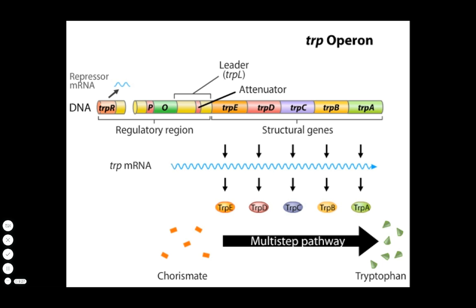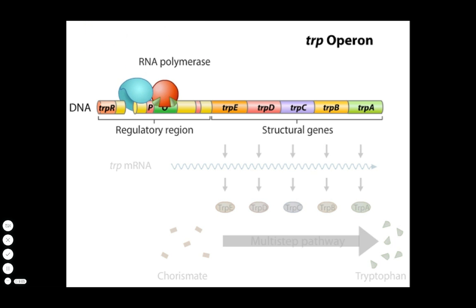The operon has a repressor called the aporepressor encoded by the trpR gene. If the cell has excess tryptophan, tryptophan binds to the aporepressor to form an activated complex called the holorepressor. In a classic example of negative regulation, the holorepressor now binds to the trp operator and turns off the expression of the structural genes by blocking RNA polymerase.